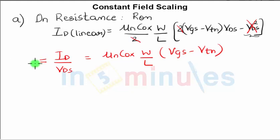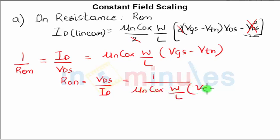ID/Vds is also 1/Ron, or the resistance of the channel when the transistor is on, which gives Ron = 1/(μnCox · W/L · (Vgs - Vtn)). In constant field scaling, the oxide capacitance increases by a factor of S. We know Vgs reduces by a factor of S, and threshold voltage also reduces by a factor of S. Mobility remains unchanged.